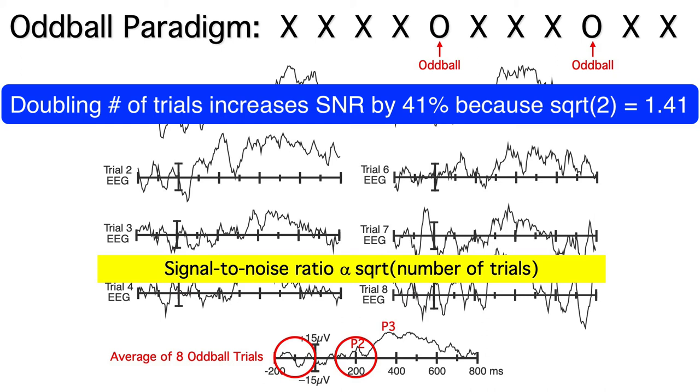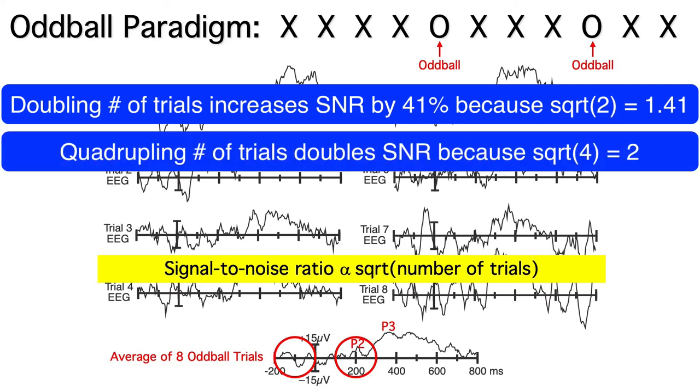So doubling the number of trials from 8 to 16 would only increase the signal-to-noise ratio by 41 percent, because 1.41 is the square root of 2. We'd need to quadruple the number of trials to double the signal-to-noise ratio, because the square root of 4 is 2. So we'd need 32 trials to double the SNR that we get with 8 trials.